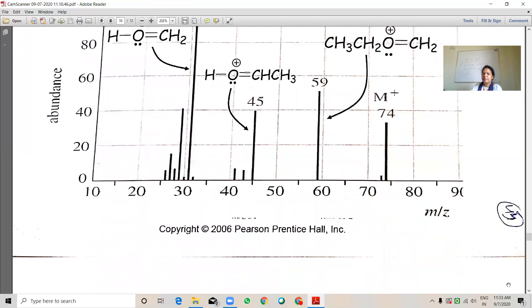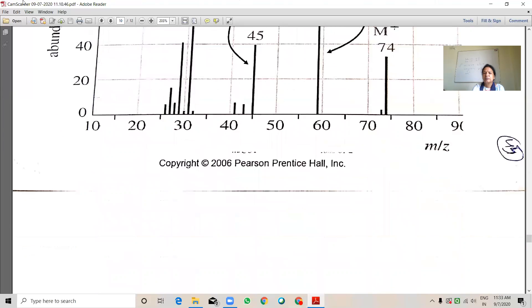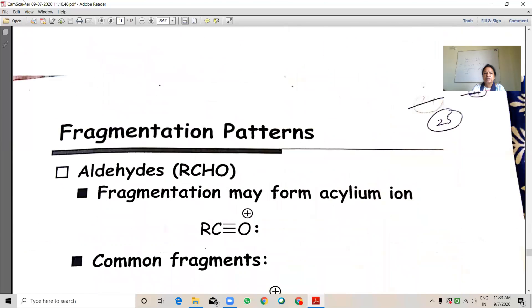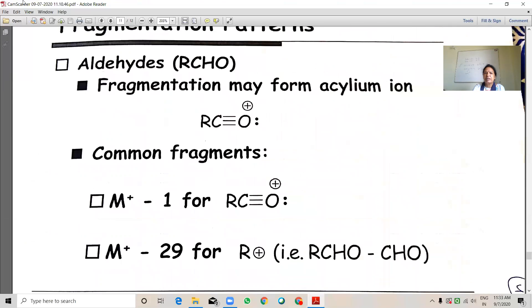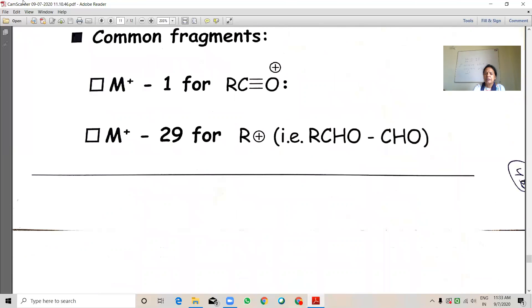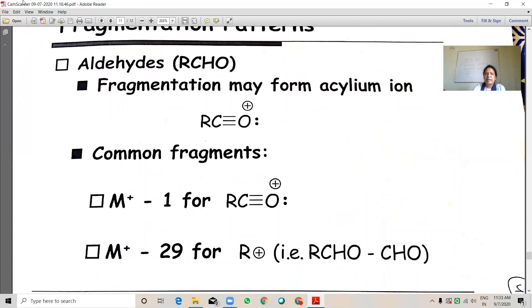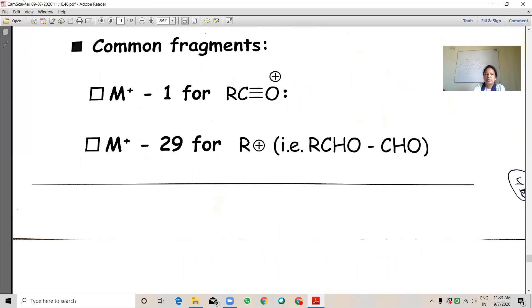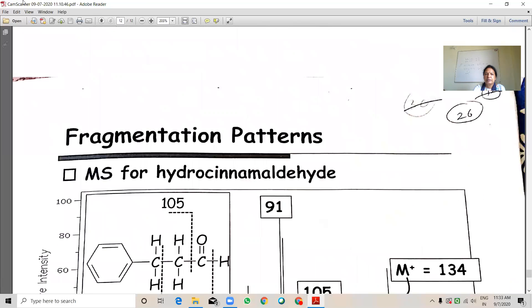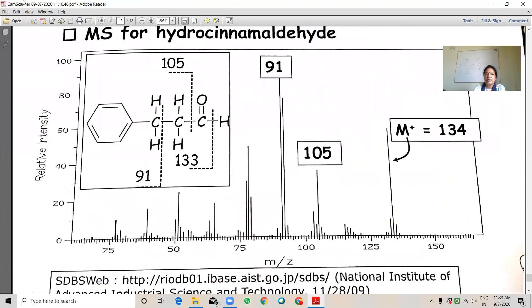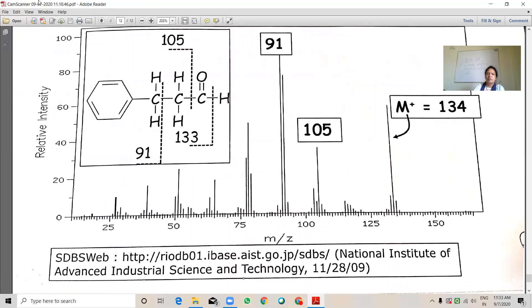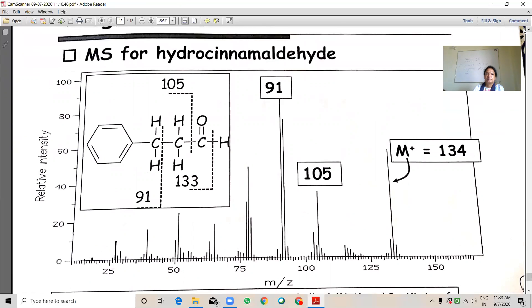So these are the fragmentation patterns in aldehyde. Fragmentation is due to the acylium, RC triple bond O. Hydrocinnamic aldehyde here base peak is observed at 91. This one benzene ion.